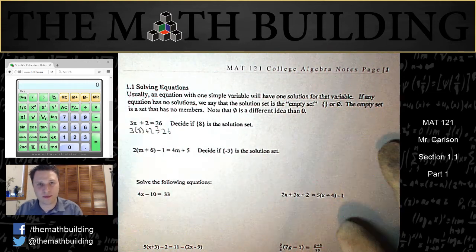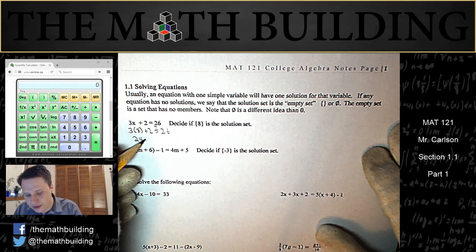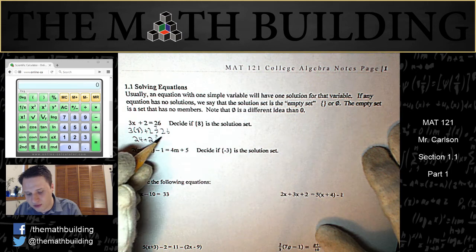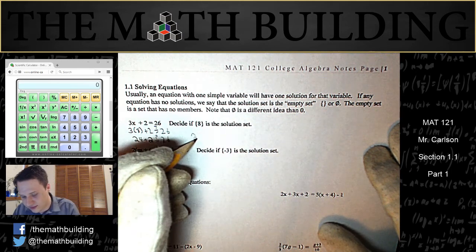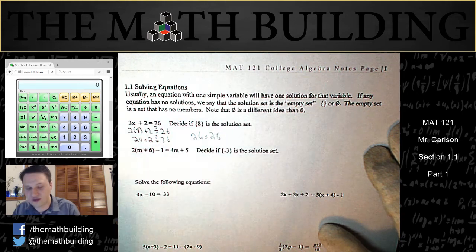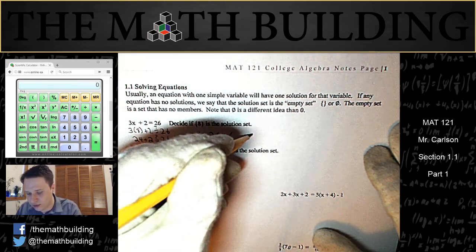3 times 8 is 24, plus 2 is maybe equal to 26. Sure enough, 24 plus 2 is 26. So we have the two sides of the equal sign equaling each other, and therefore 8 is the solution set. The answer to the first problem is yes.